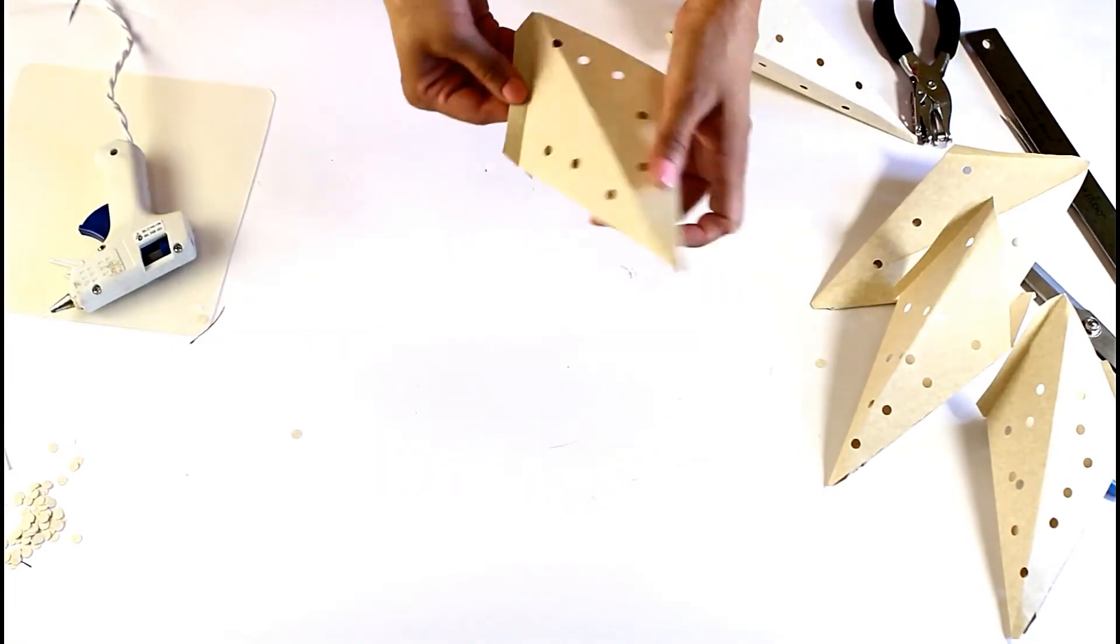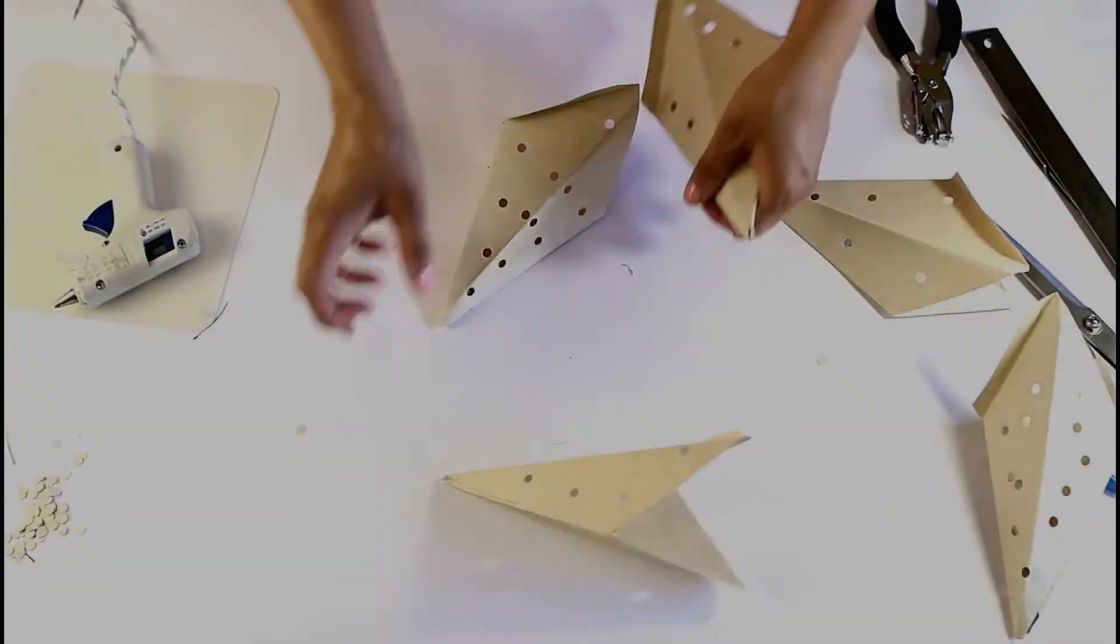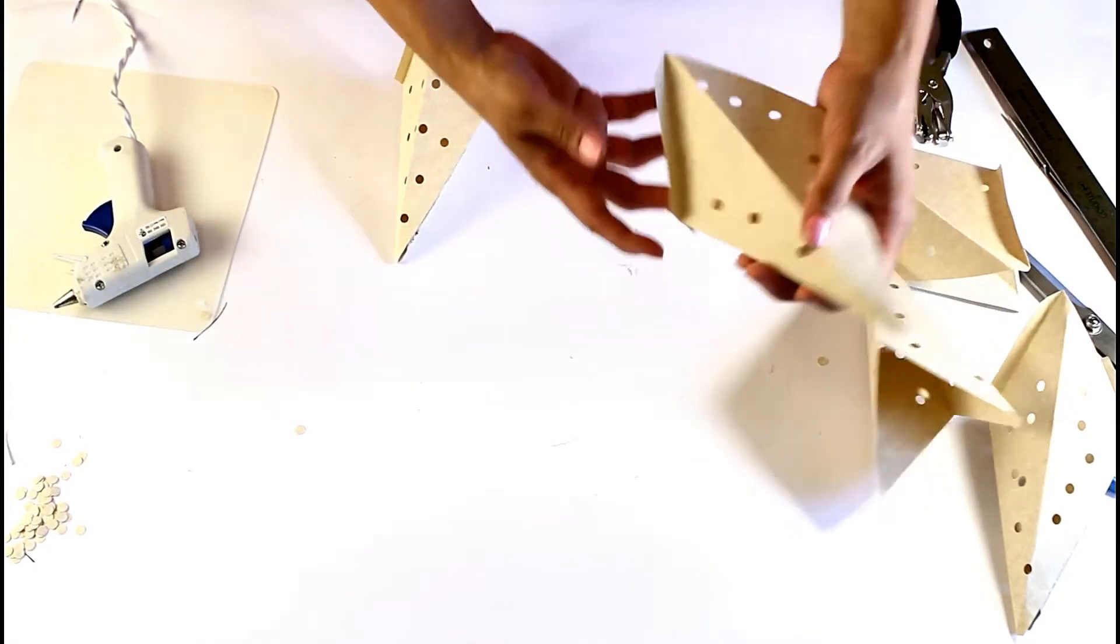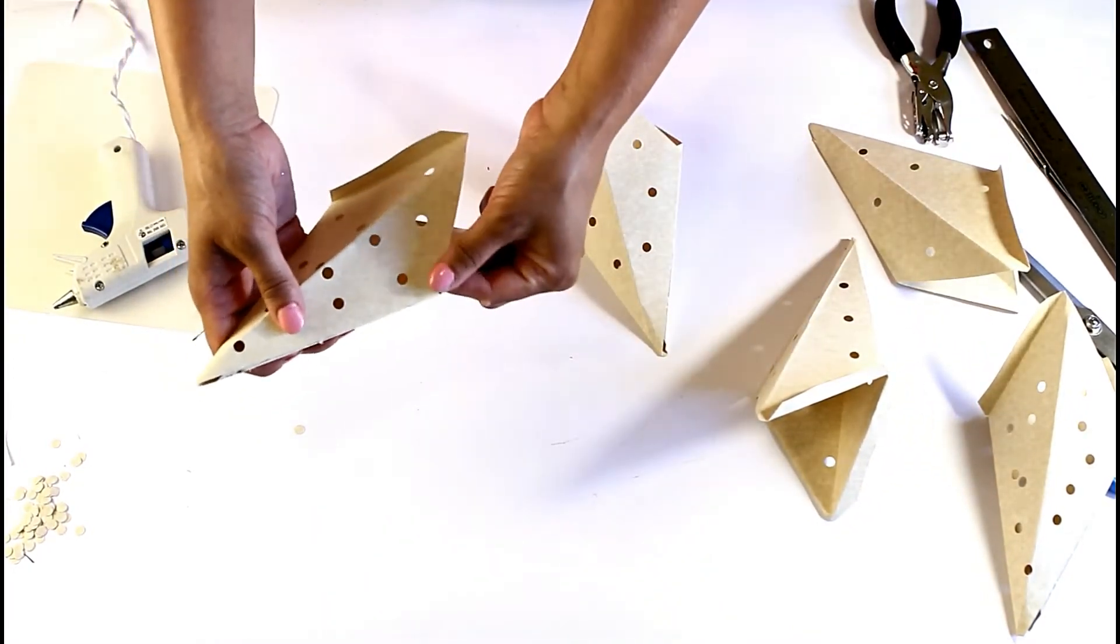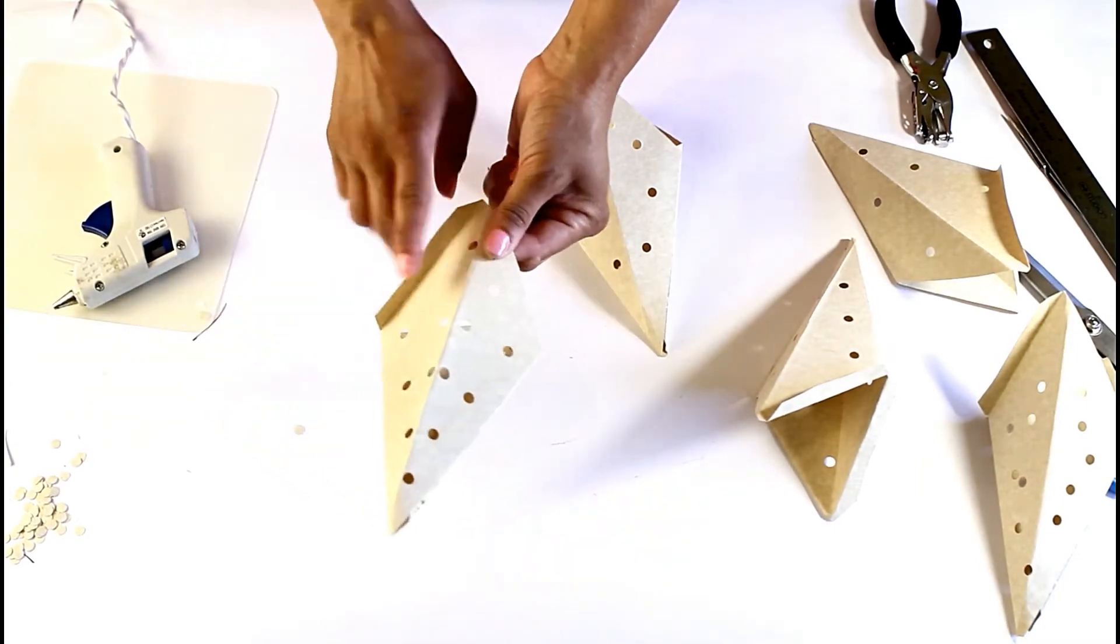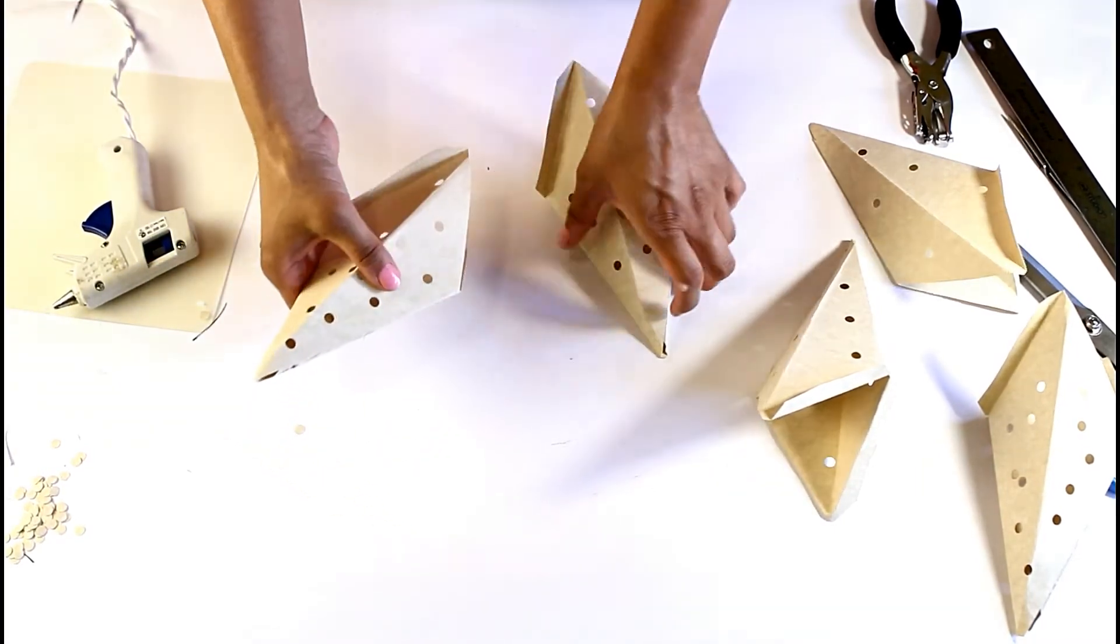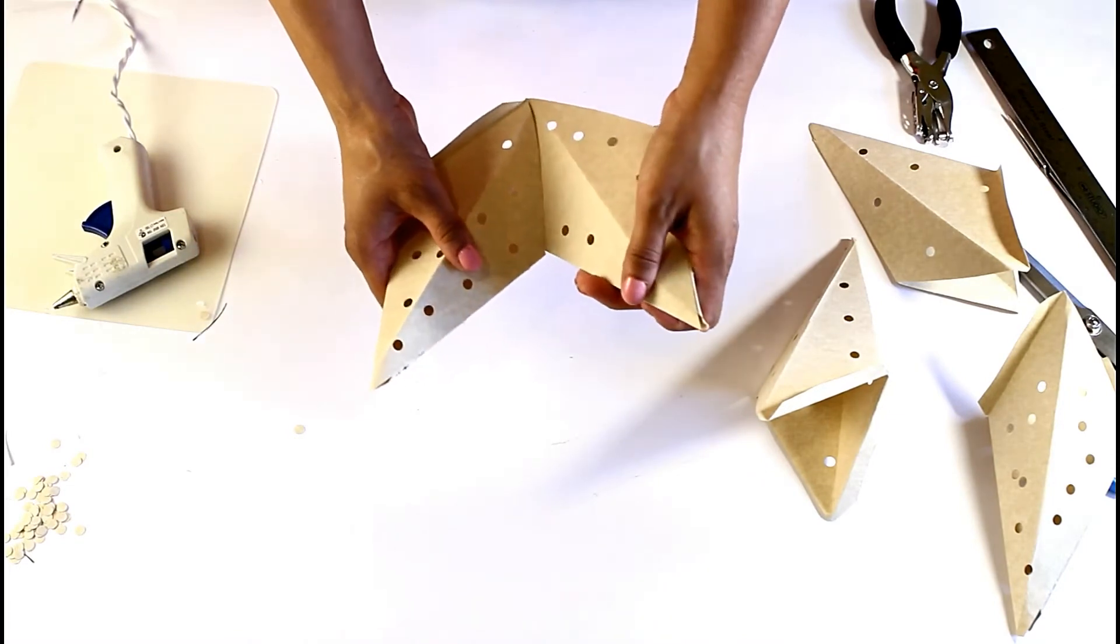Then you're going to start joining these together. You're going to take this side that has this flap, and this side that does not have the flap. The flap is always going to be towards your right, and you're going to glue them together like that.